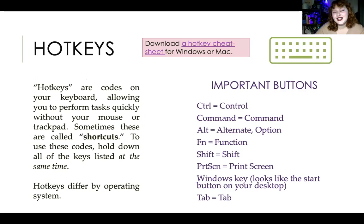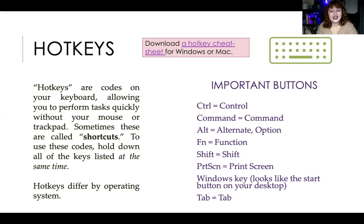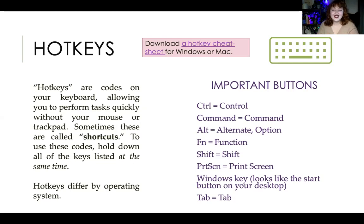A hotkey is a keyboard shortcut to perform a task — there are tons of hotkeys for pretty much anything. Think about those '90s hacker movies where they never touch the mouse; they're navigating entirely with the keyboard. Hotkeys differ depending on your operating system. The important modifier keys are: Control (primary on Windows), Command (primary on Mac — you'll have both on Mac but Command is primary), Alt/Option, Function, Shift, Print Screen, the Windows key on Windows, and Tab.